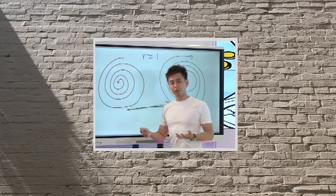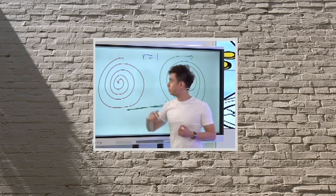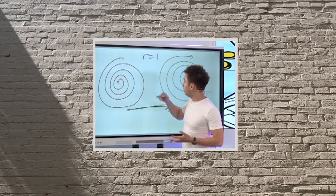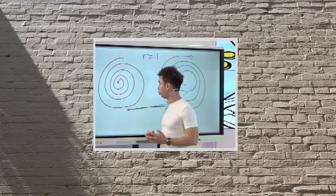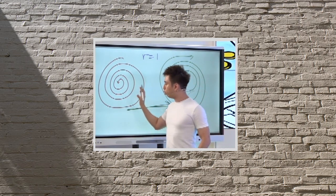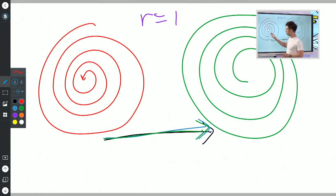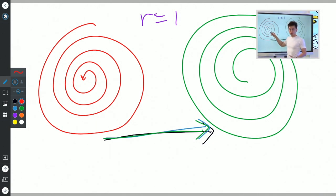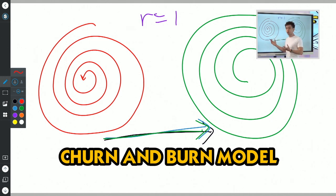If the R-naught number is more than one, it means that if one person gets it, it's going to spread to more than one person. However, if it's less than one, it means it's eventually shrinking. Most business models in terms of acquiring customers look like this — where they get a customer and it eventually dies out on its own, where they're utilizing paid ads and social media in a churn and burn model where they get a new lead, a new sale.